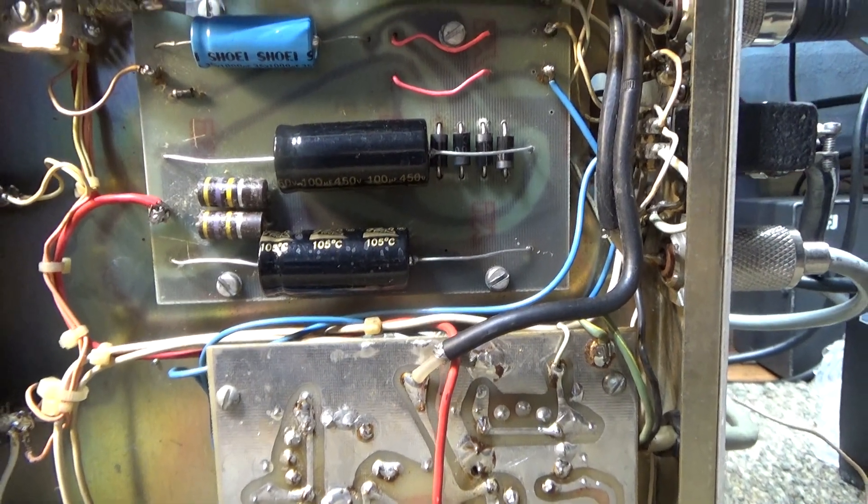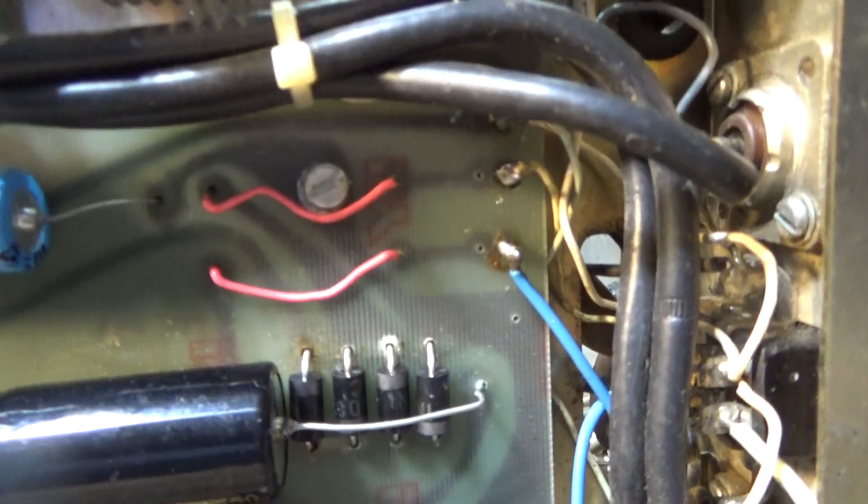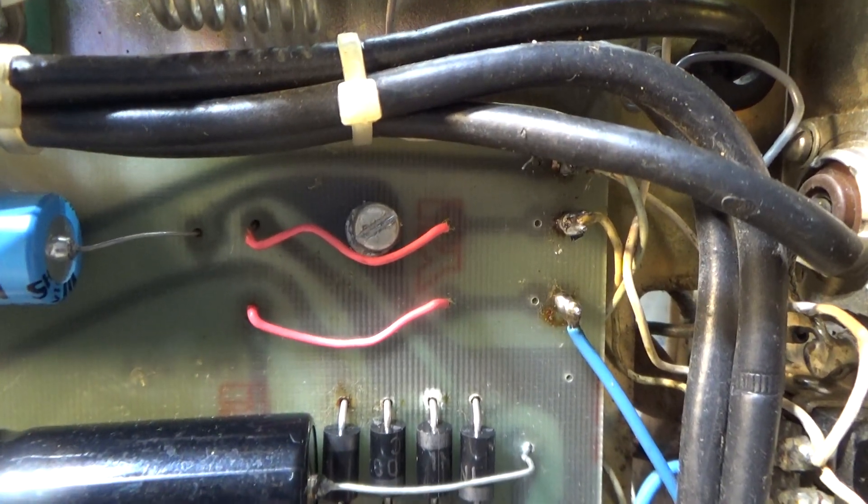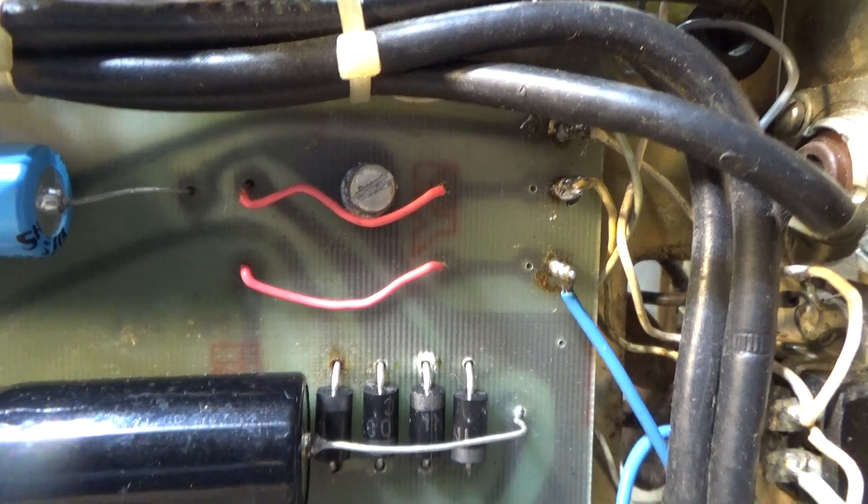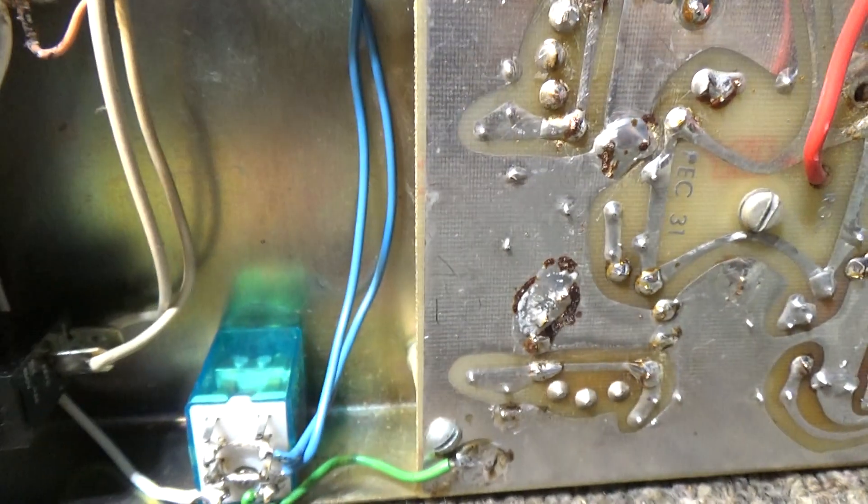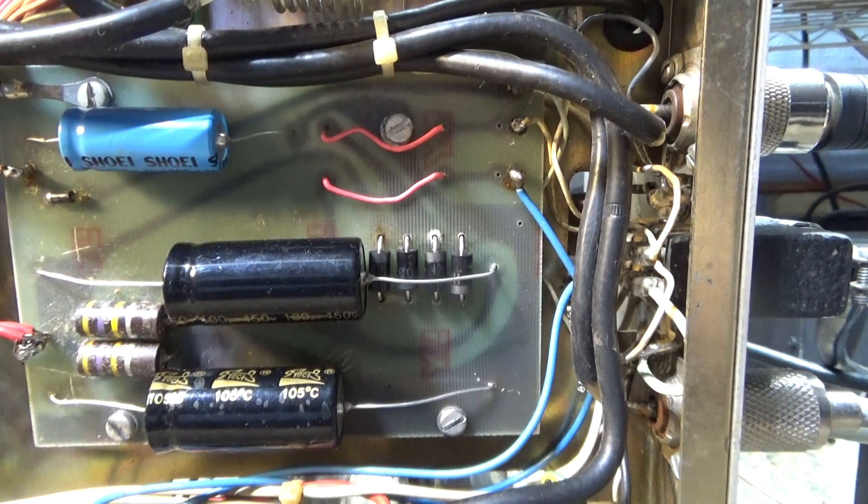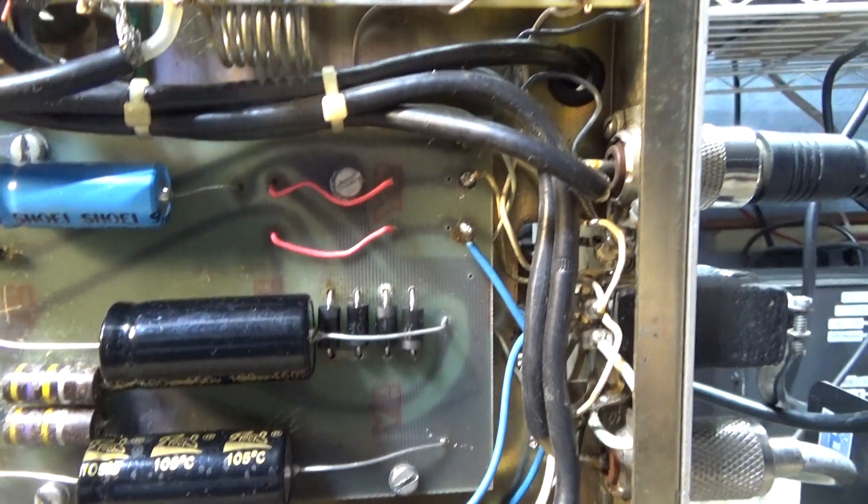If you see those two red jumper wires there, some of the amps have the relay right there on the board, and some of them mounted the relay a little above where I got that one mounted. But anyway, that's the purpose of that relay. It's a better amp with the relay, and that's why I put it in there.